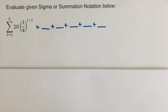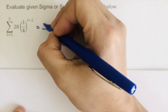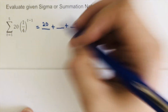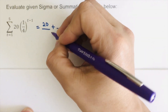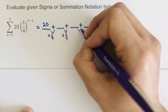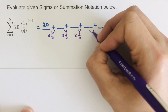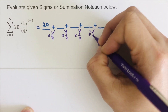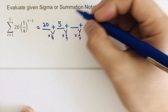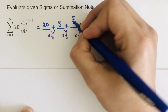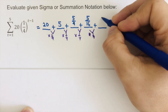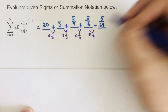What we put in the blanks: the first term is 20. Remember that the multiplier is one fourth, meaning we multiply each term by one fourth. So 20 times one fourth is five, five times one fourth is five over four, five times one fourth is five over 16, and five times one fourth is five over 64.